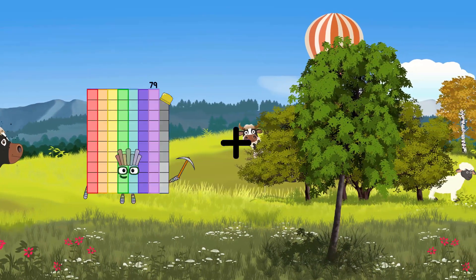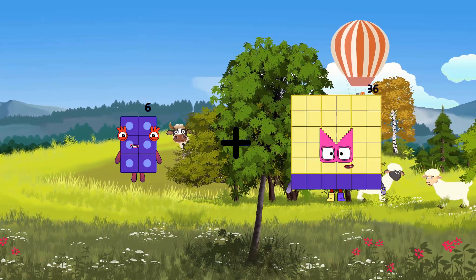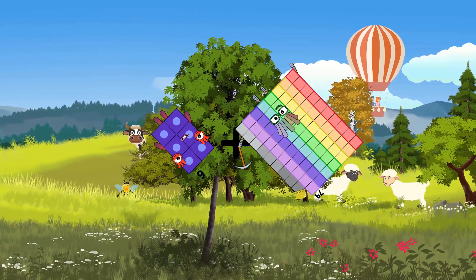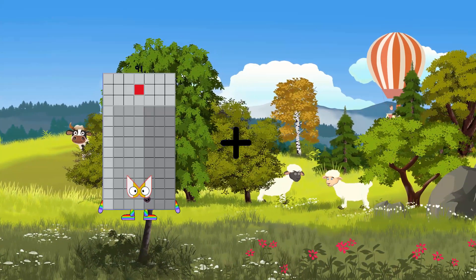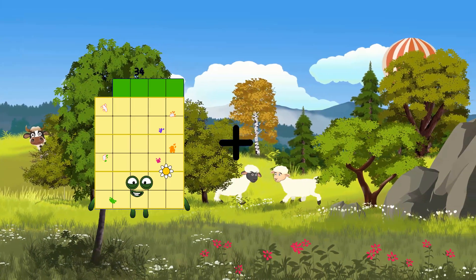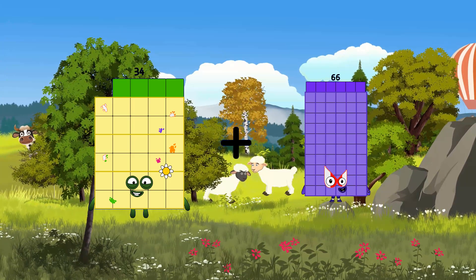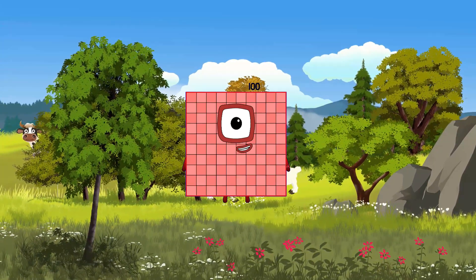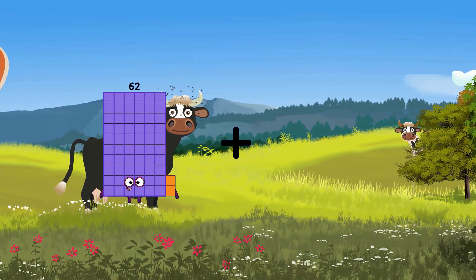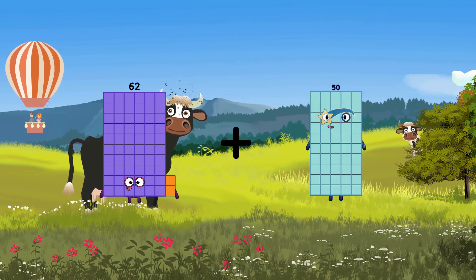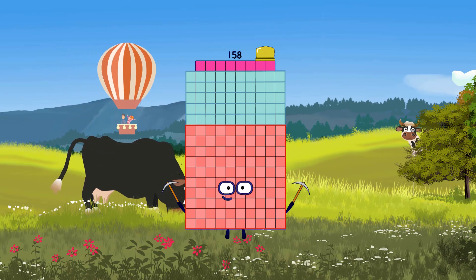6 plus 79 equals 85, 34 plus 66 equals 100, 62 plus 96 equals 158.